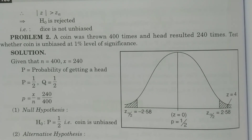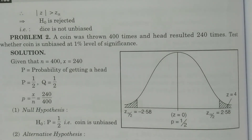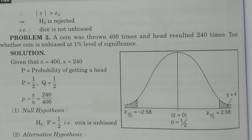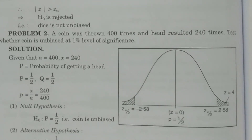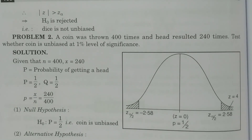H0 is rejected. H1 statement: the dice is not unbiased. This is problem number one — an example of a hypothesis test for proportions. Thank you.